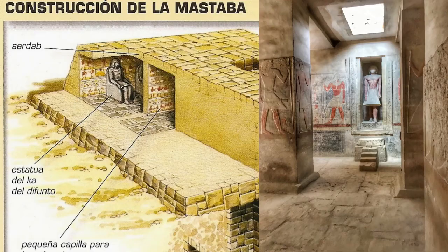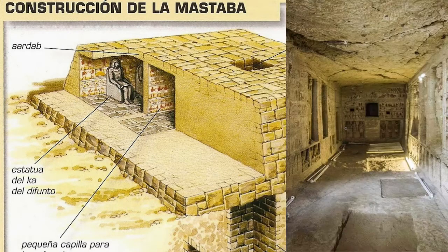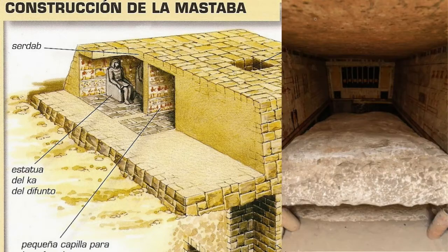Parts of a mastaba: 1. Offering chapel. 2. Sertab. 3. Sarcophagus chamber.